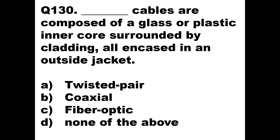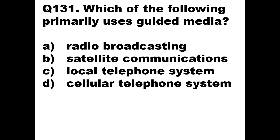Question 130: Dash cables are composed of a glass or plastic inner core surrounded by cladding, encased in an outside jacket. This describes an optical fiber — an inner core of glass or plastic, surrounded by cladding, with a protective jacket that gives strength. Light travels in the inner core by total internal reflection. Option C — fiber optic — is correct.